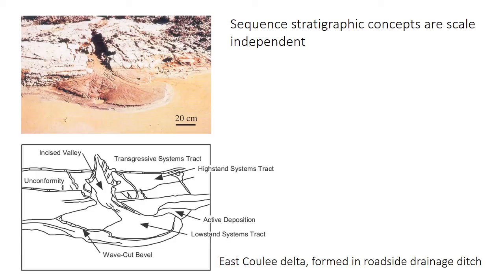The reason that a systems track being built of parasequences is an unnecessary idea is that sequence stratigraphy is scale independent. If the parasequence reflects a base level cycle — and some parasequences can be autocyclic, like in a delta or in carbonate sediments — but if the parasequence is a base level cycle, well then it's a depositional sequence. It'll have a lowstand systems tract, transgressive, highstand, and falling stage. The scale doesn't matter; as long as it's a complete cycle of base level, it will contain the systems tracts, because systems tracts are just defined off of the balance between base level change and sedimentation rate.